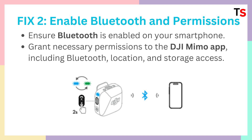Fix 2 is enable Bluetooth and permissions. As you can see in the picture as well, ensure Bluetooth is enabled on your smartphone. After that, grant necessary permissions to the DJI MIMO app — whatever pop-ups come in front — including Bluetooth, location, and storage access as well. Make sure to give all the permissions set to allow.